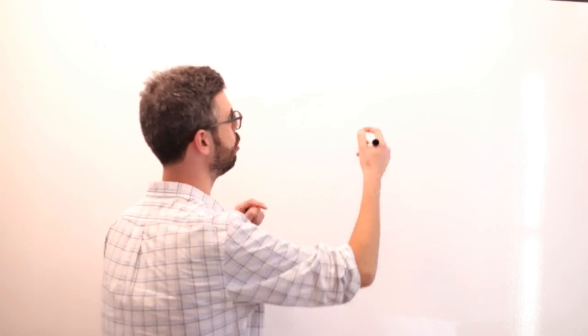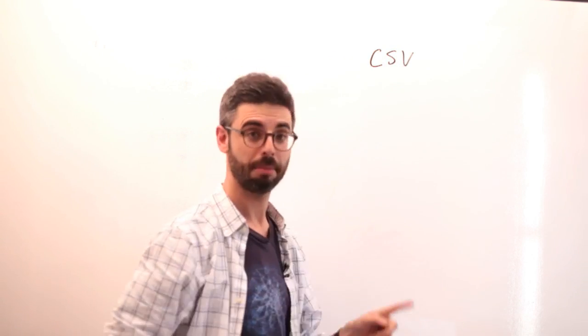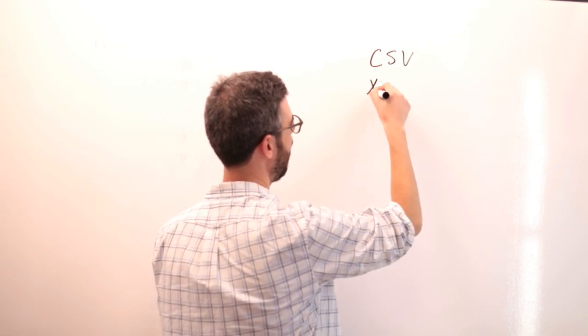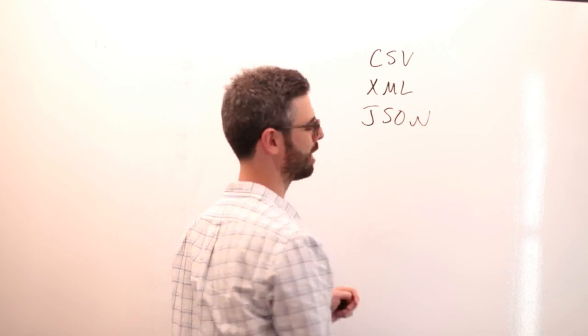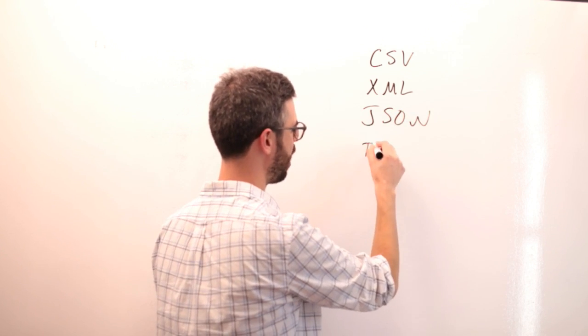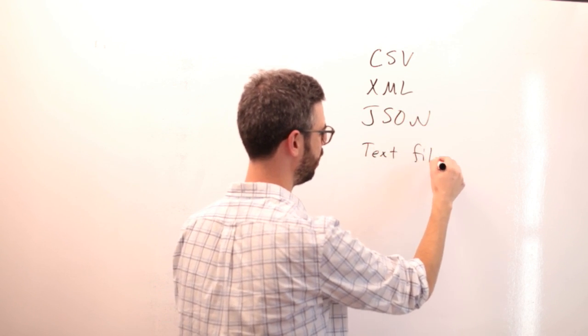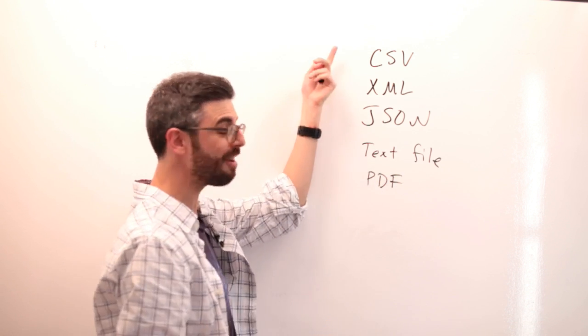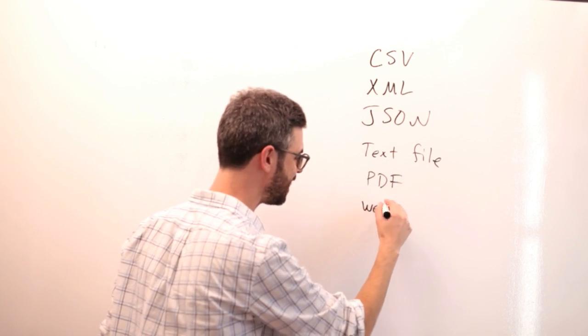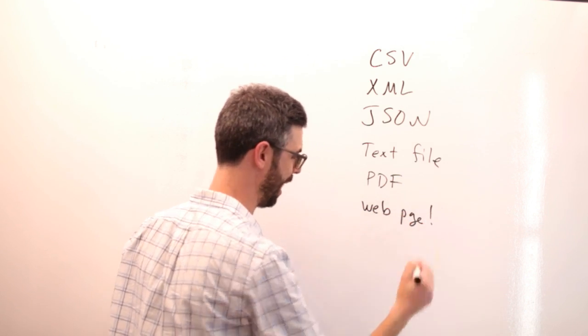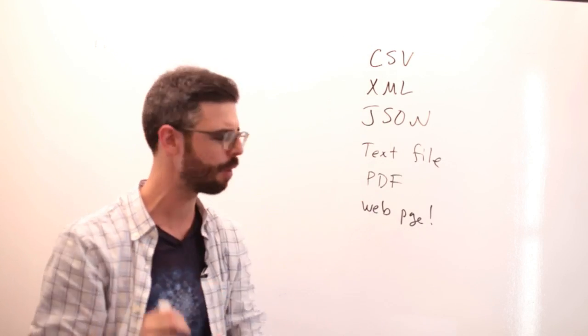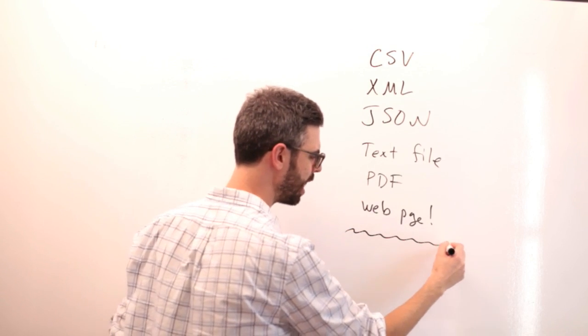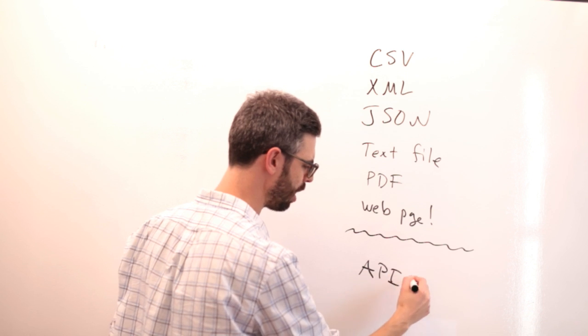So first of all, the data could come in a variety of formats. Here's a list of some formats that you might see. CSV, what is that? XML, what is that? JSON, what is that? You might just find a text file. You might just find a PDF. Or you might actually not find any of these formats, but you see the data right there on the web page. How do you get access to that if it's not in one of these quote unquote formats? And then there's this sort of side discussion of like, what if you see this word API?